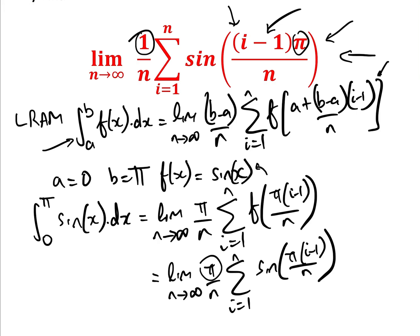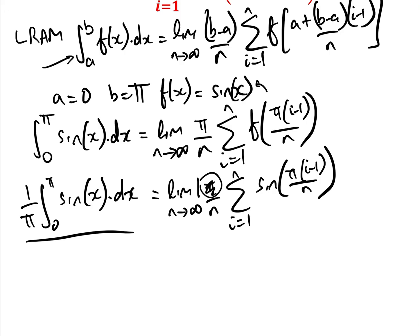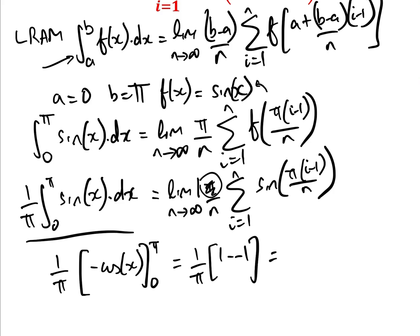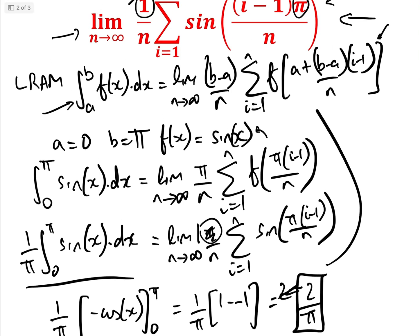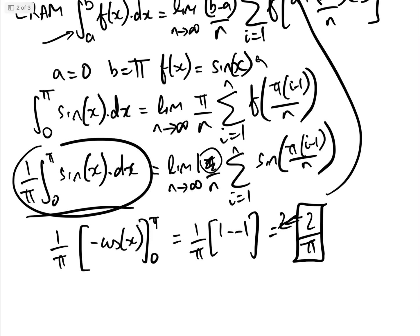Dividing both sides by π, we get (1/π) times the integral from 0 to π of sin(x) dx equals our limit. Evaluating: the integral of sin(x) is minus cos(x), so between 0 and π we get (1/π) times (1 minus (minus 1)) which equals 2/π. Therefore that limit equals 2/π.